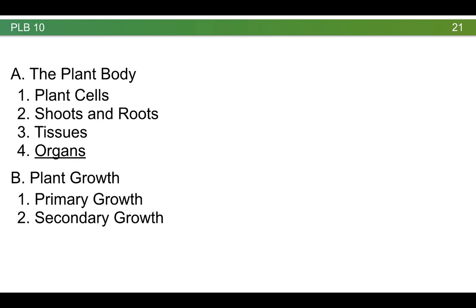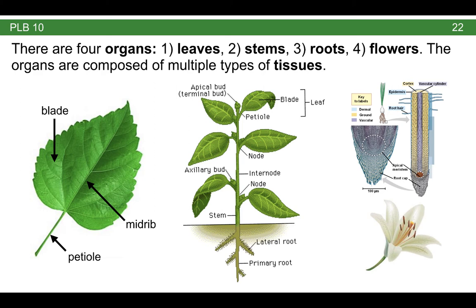Moving on from tissues, let's think about plant organs. There are four primary organs in plants: leaves, stems, roots, and flowers. Keep in mind, not all plants have flowers, so that could be an exception depending on the plant you're looking at. The organs themselves are composed of multiple different types of tissues, just like I showed you in the cross section of a leaf.